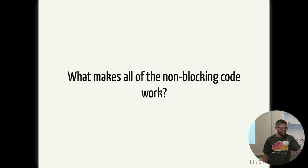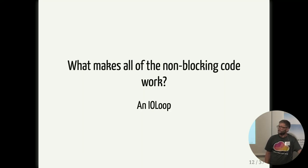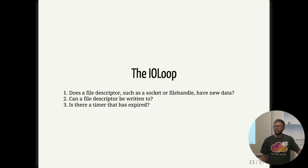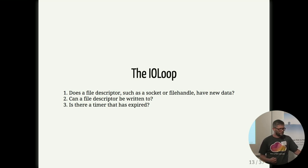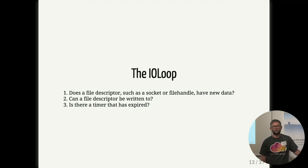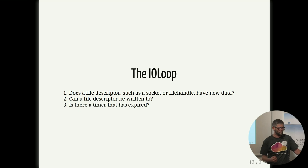So what makes all of this non-blocking code work? That's the IO loop. An IO loop is something that can handle file descriptors - it can do things like check if a socket or file handle is ready to be written to, or if it has any new data. But there's also timers. With these three things you can build amazingly complex applications that run things in parallel.